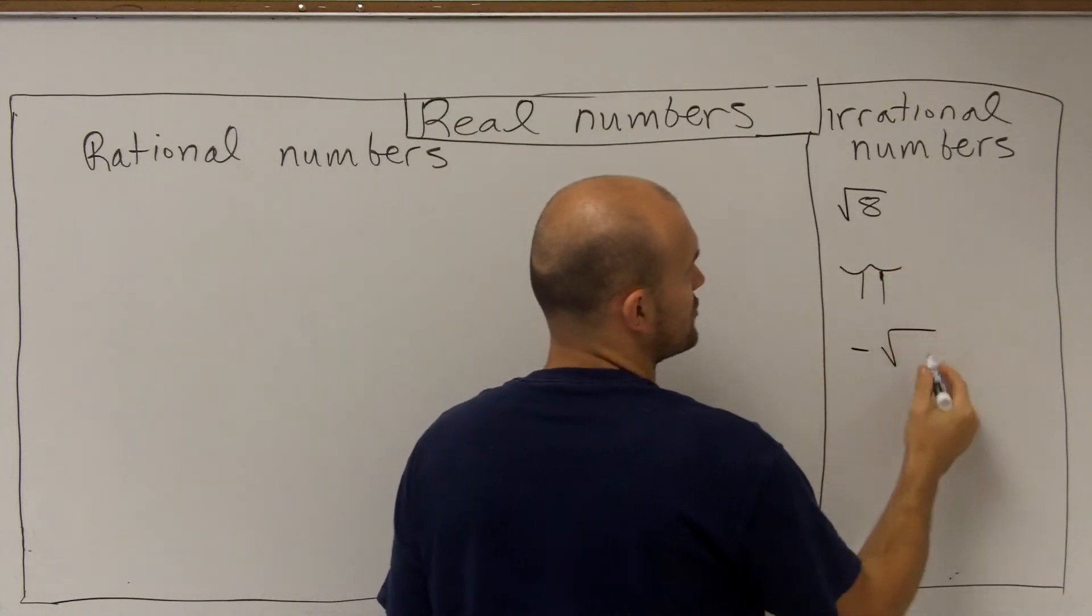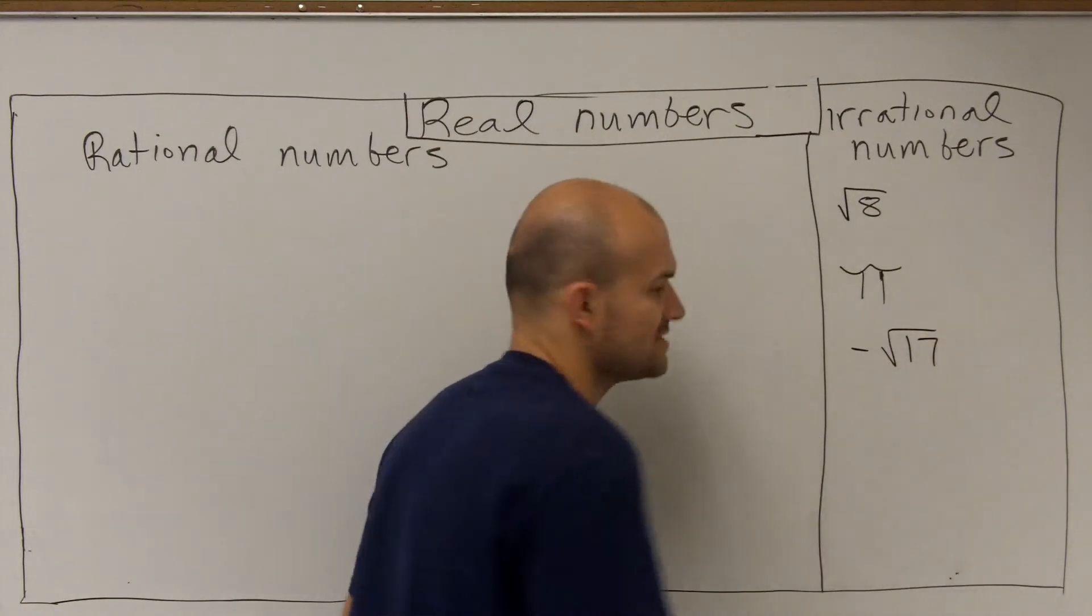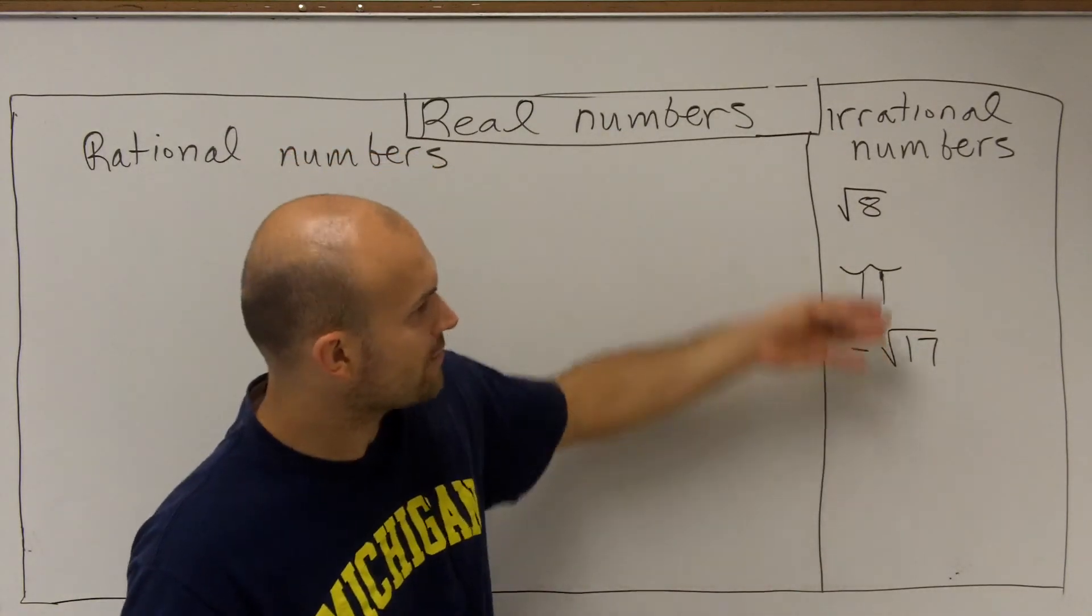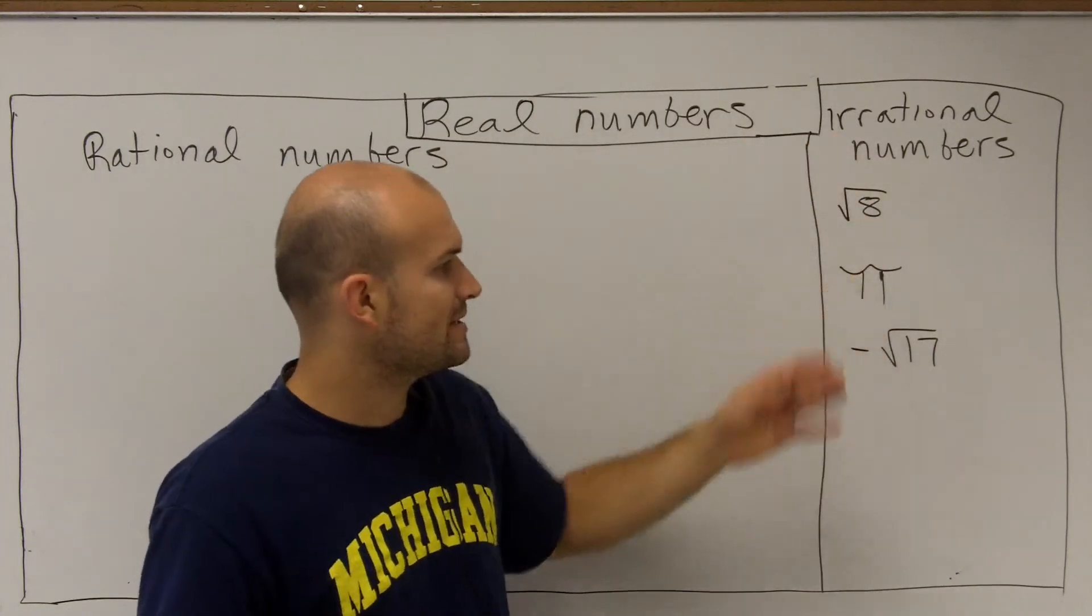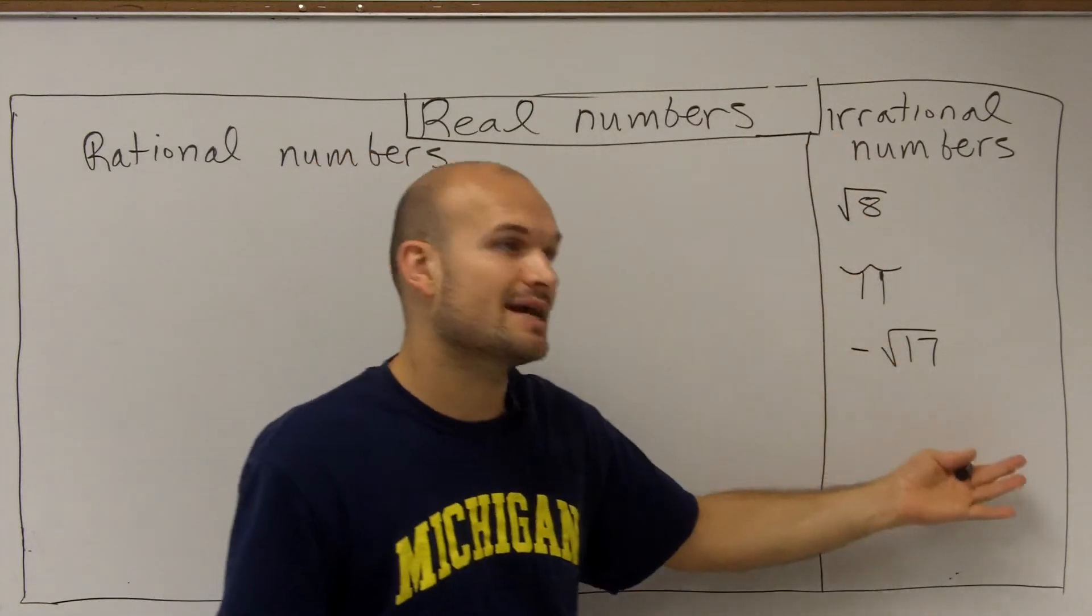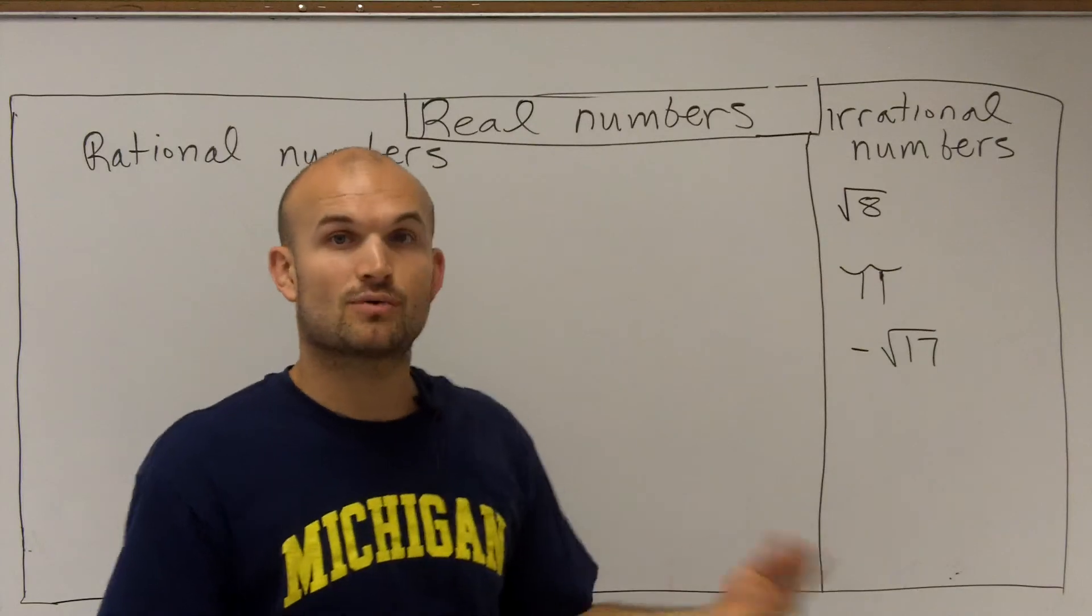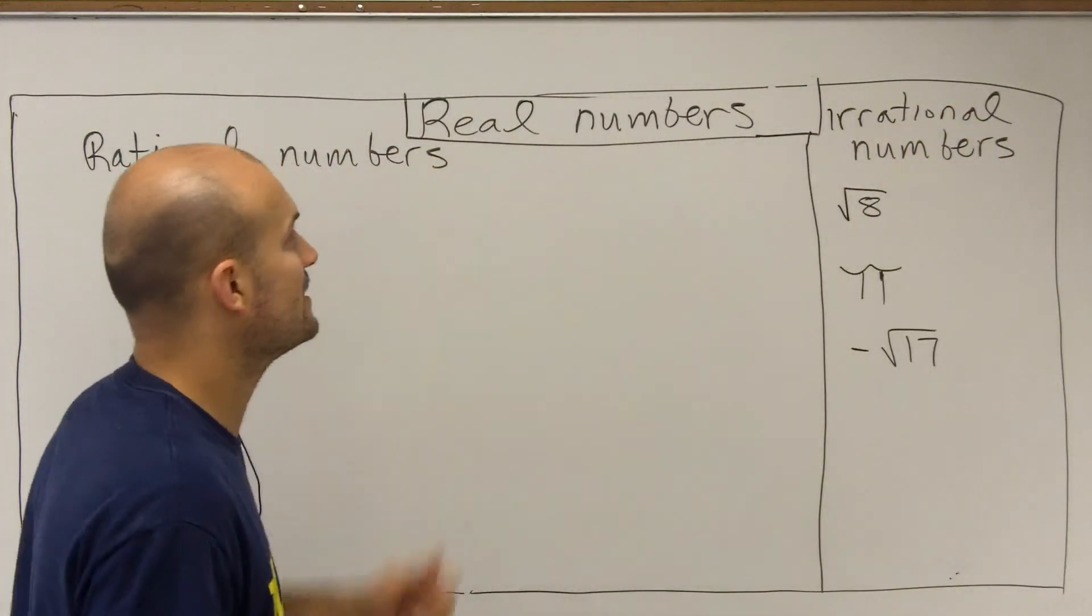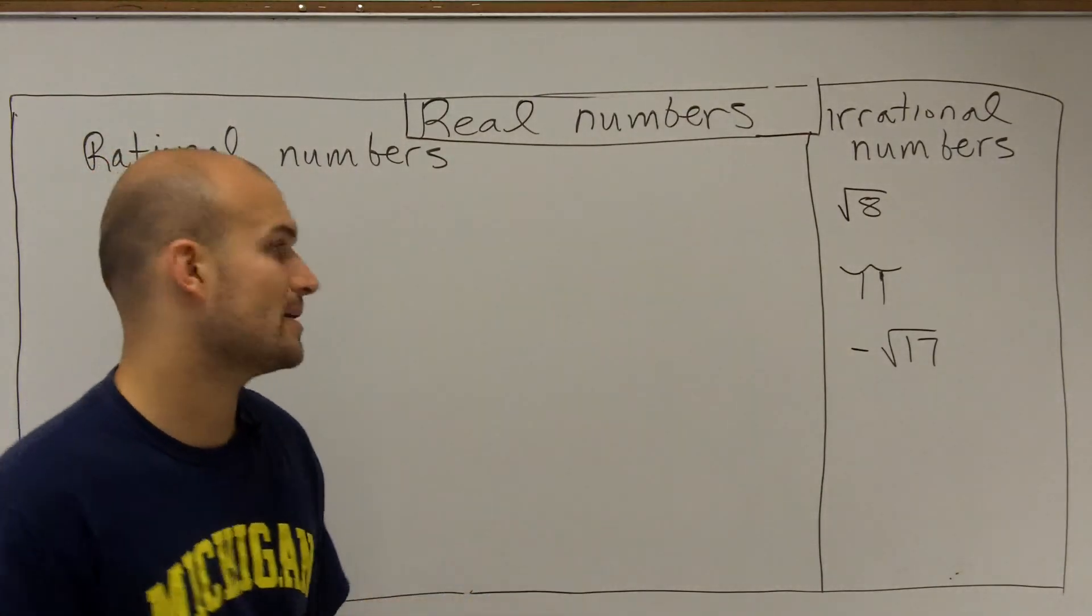It also doesn't matter if you write in the square root of 17. So anytime we're dealing with the square root or with pi, it doesn't matter if it's positive or negative, but as long as it's not a square number, like square root of 16 would not be an irrational number. That would be a rational number, which I'll talk about in a little bit.